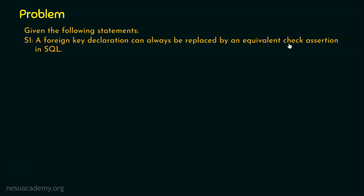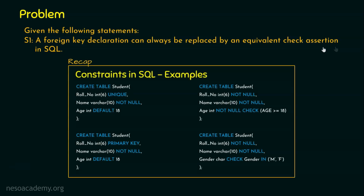To understand the check assertion, consider creating a table called Student where the gender column should accept only the values M for male or F for female — no other values are permitted. This check constraint verifies the condition at the row level, making it an entity-level integrity constraint.